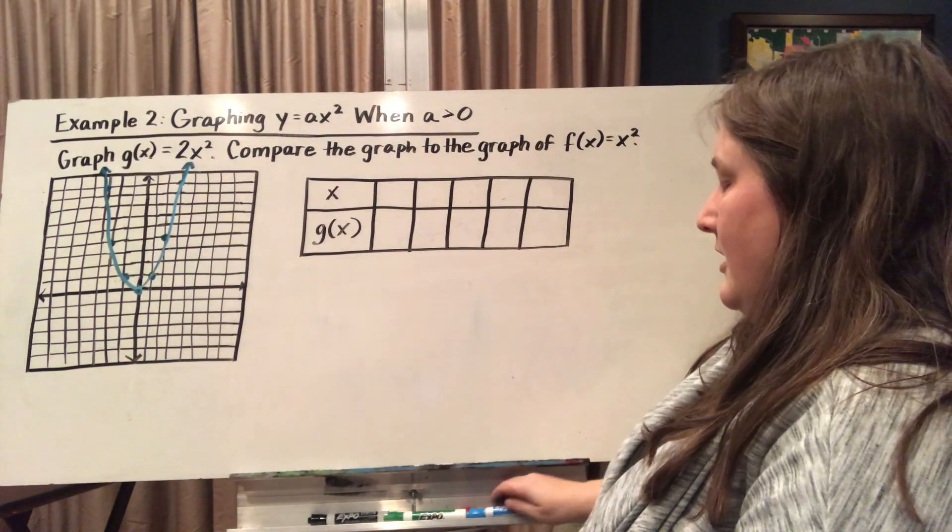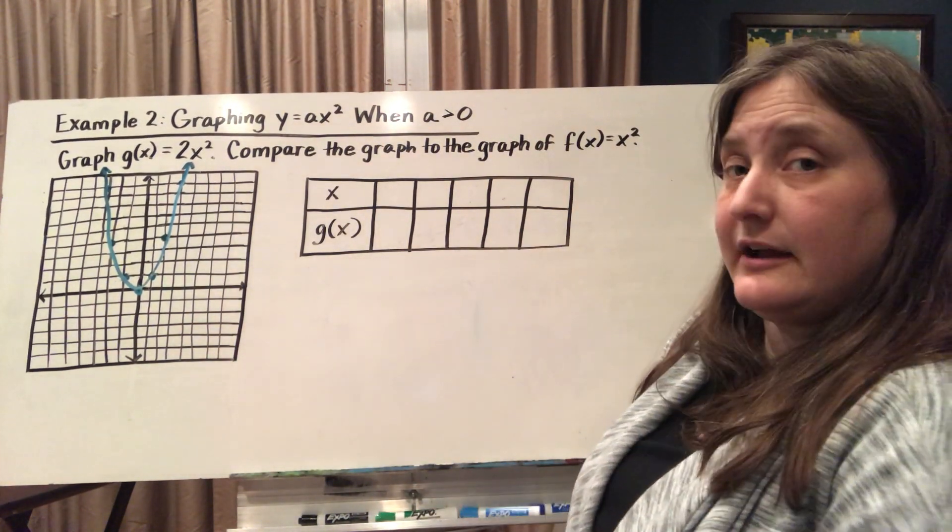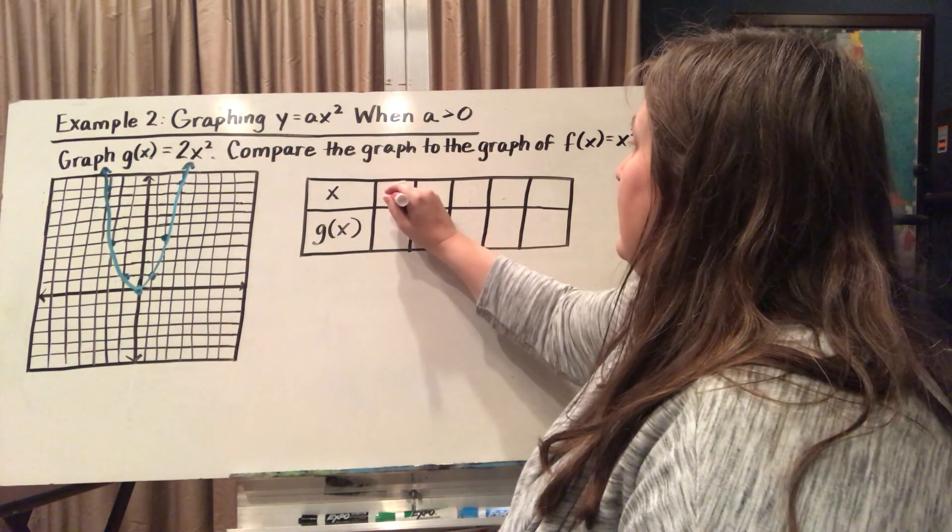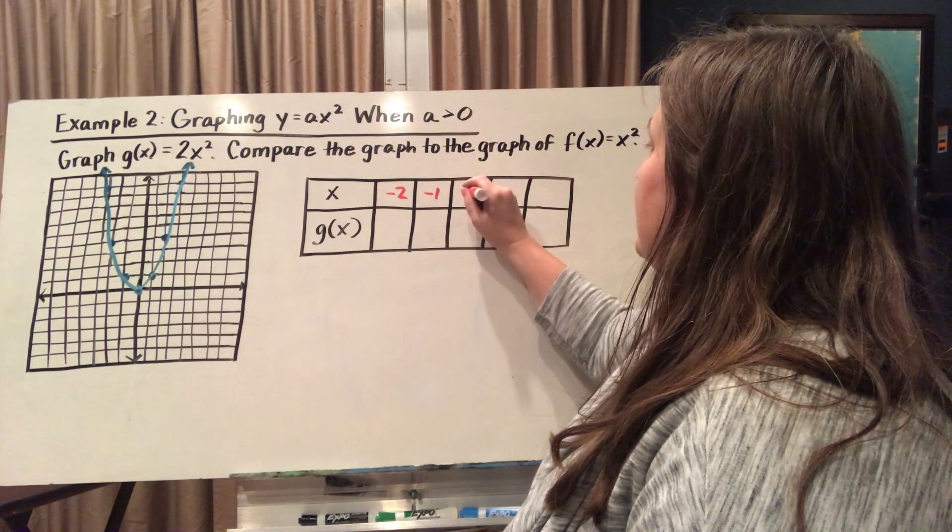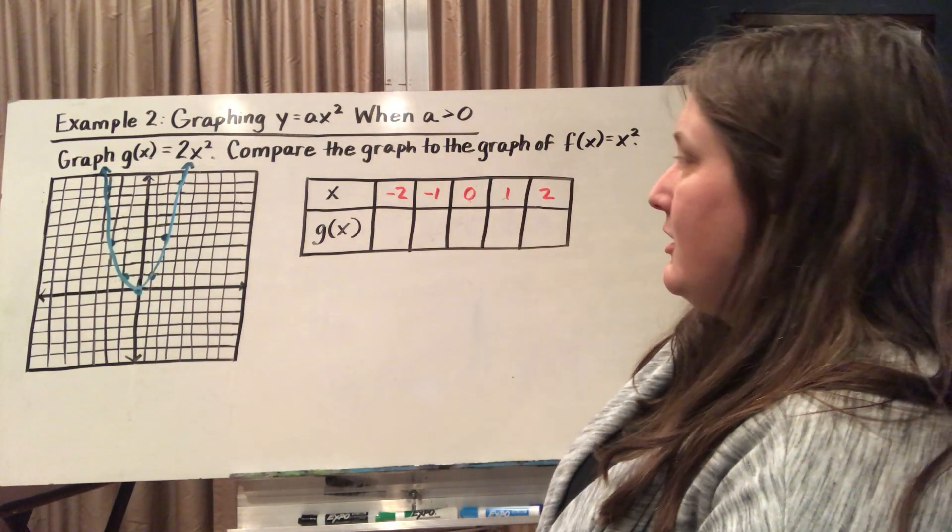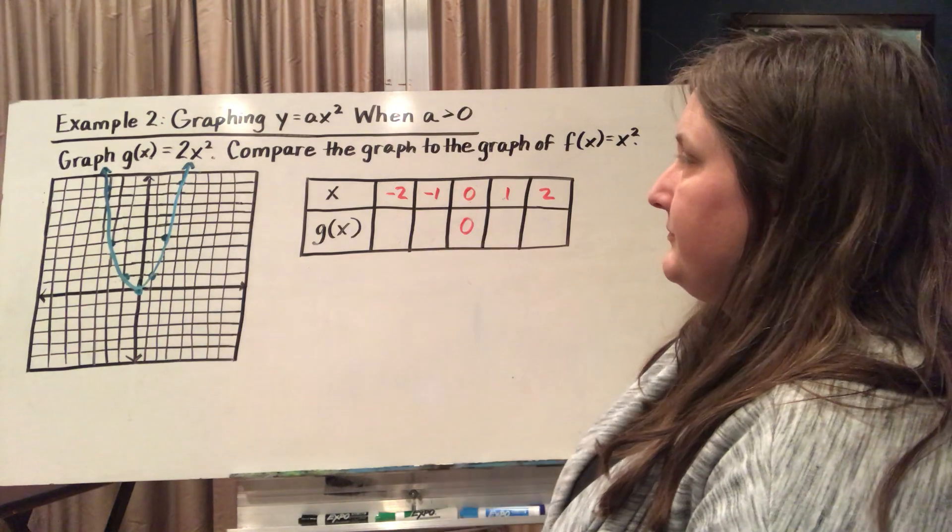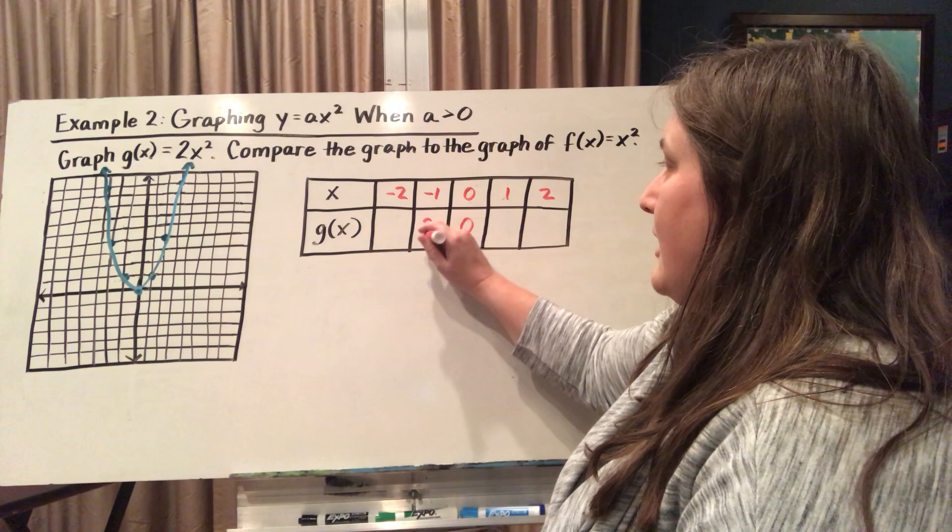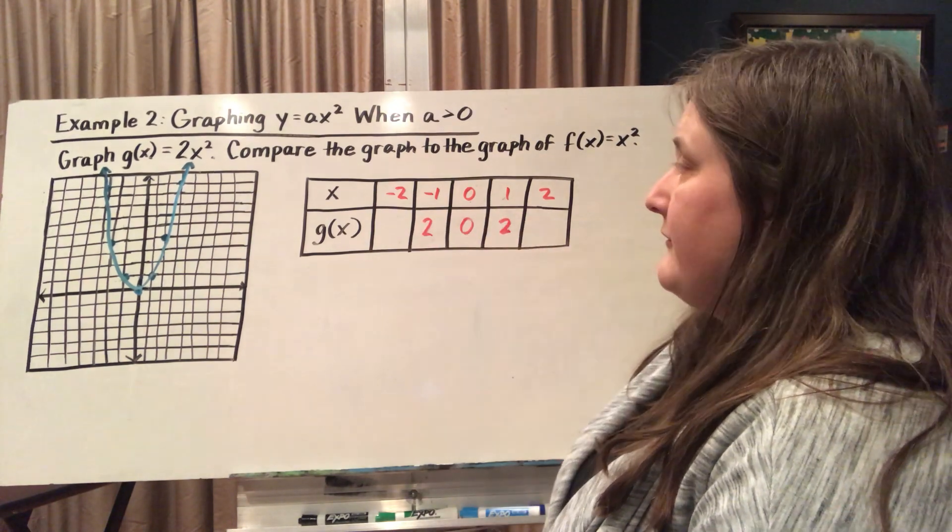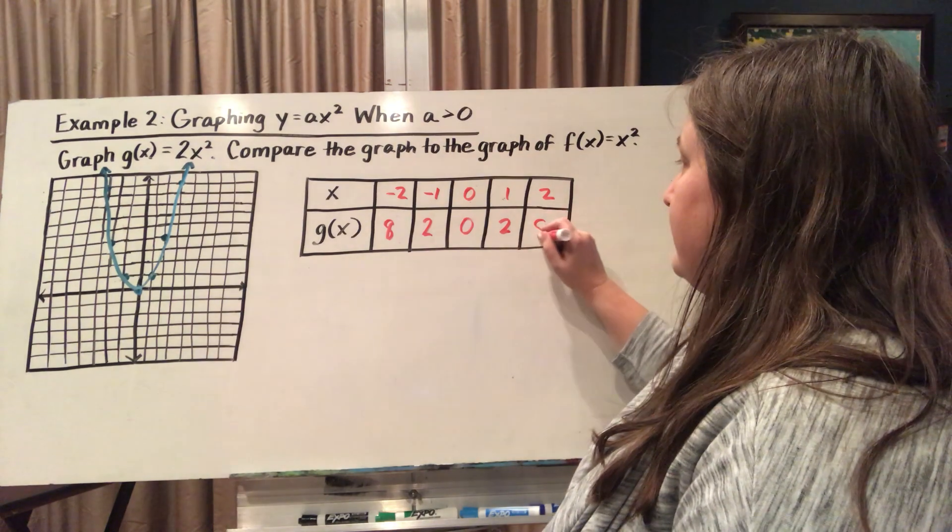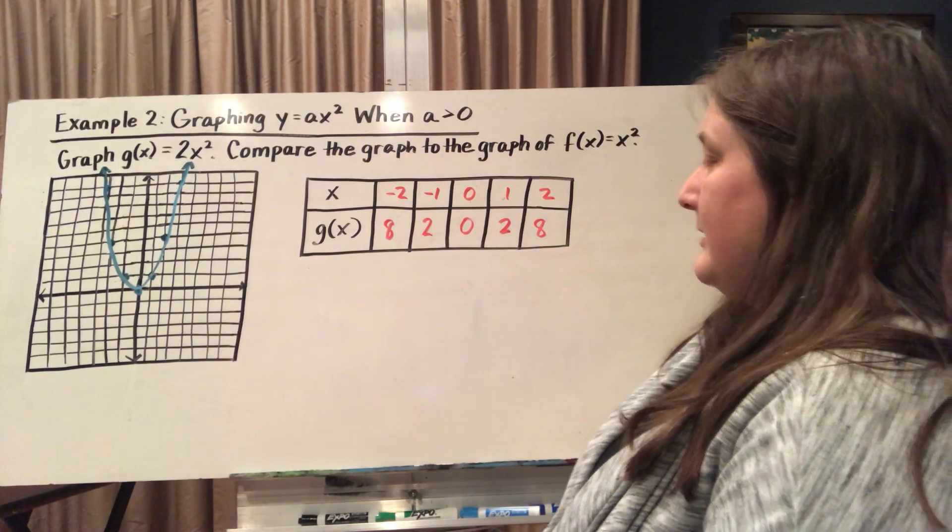Now I'm going to graph g(x), which equals 2x squared. So I'm going to find some inputs here to test. If I plug in 0, I get an output of 0. If I plug in 1 or negative 1 in this case, I'm getting an output of 2. If I plug in 2 or negative 2, I'm getting an output of 8. So I'm going to put this guy on my graph.